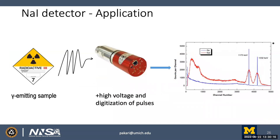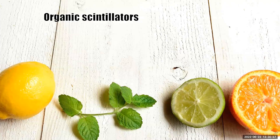With a gamma-emitting sample, a NaI detector with PMT and high voltage applied, pulses are digitized to produce spectra. In red, NaI gives two broad peaks at 1.1 and 1.3 MeV — cobalt-60. In blue, a semiconductor gives much better energy resolution — a sneak peek that semiconductors outperform scintillators in energy resolution, to be discussed briefly after organic scintillators.